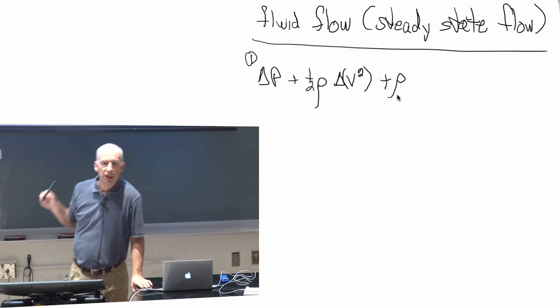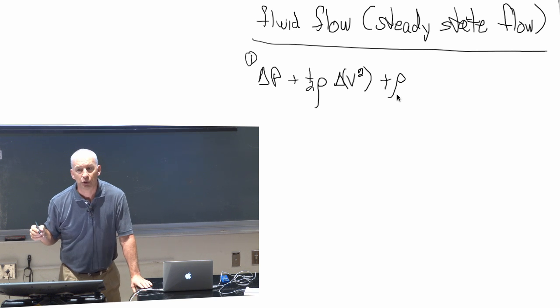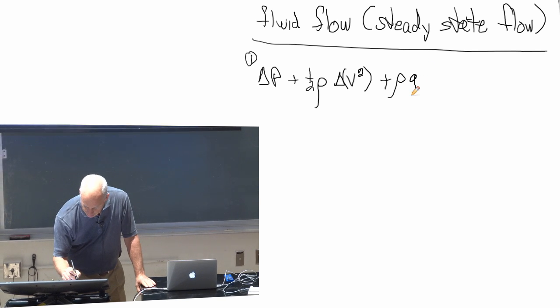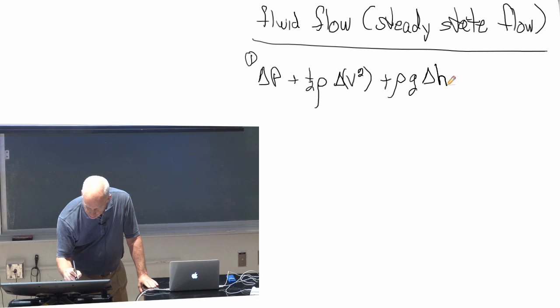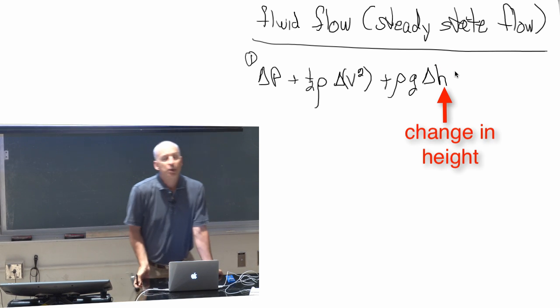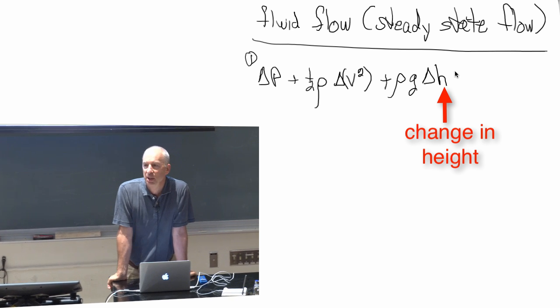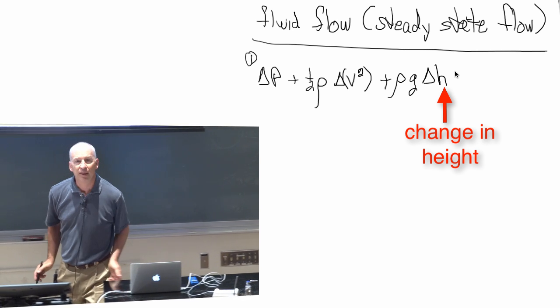Gravitational potential energy, mgh. So changes in that, mg delta h. So I'm going to write rho g delta h. Rho is, again, mass per unit volume. So gravitational potential energy per unit volume can be written that way.